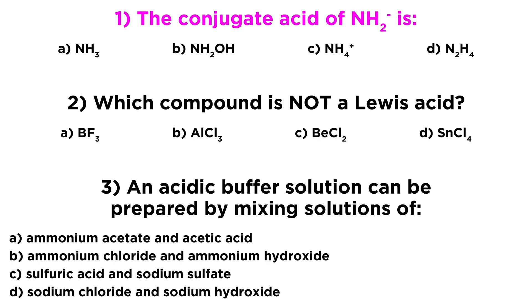For number one, we're looking for the conjugate acid of NH2⁻. In order for this to form its conjugate acid, it must act as a base, which means it must gain a proton. So NH2⁻ plus H⁺ is going to give us NH3, or ammonia, and so ammonia is the conjugate acid of NH2⁻.